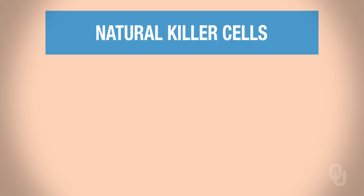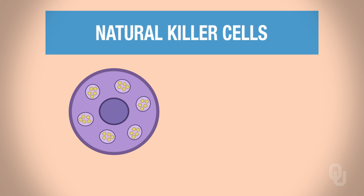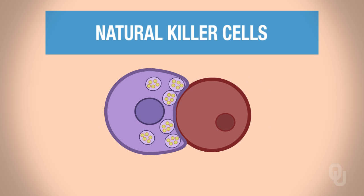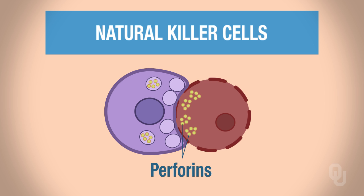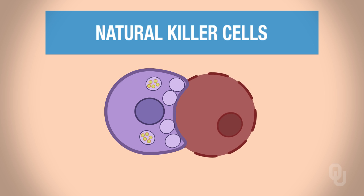Natural killer cells are similar to lymphocytes and are important in the innate response. They release chemicals called perforins and target cancer cells and virally infected cells, lysing their membranes. The natural killer cell binds to the target cell, then releases perforins that create a pore in the target cell's membrane — allowing water and ions to rush in, increasing permeability, causing the cell to swell and burst.